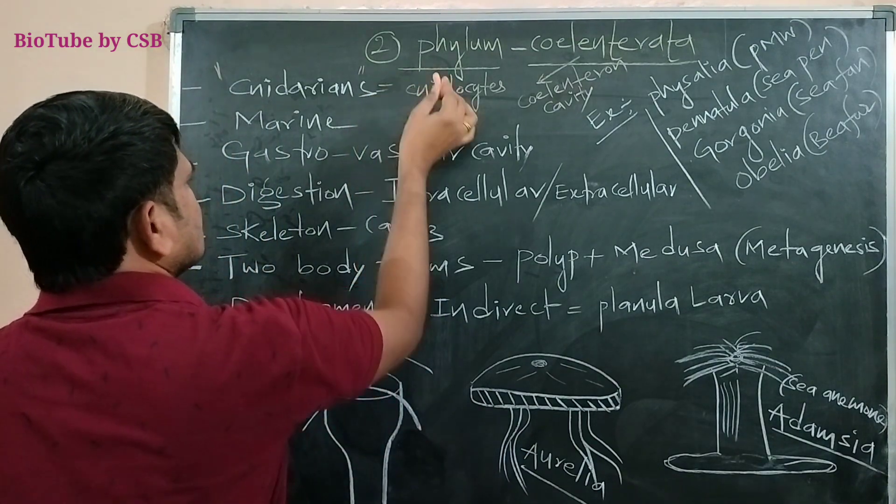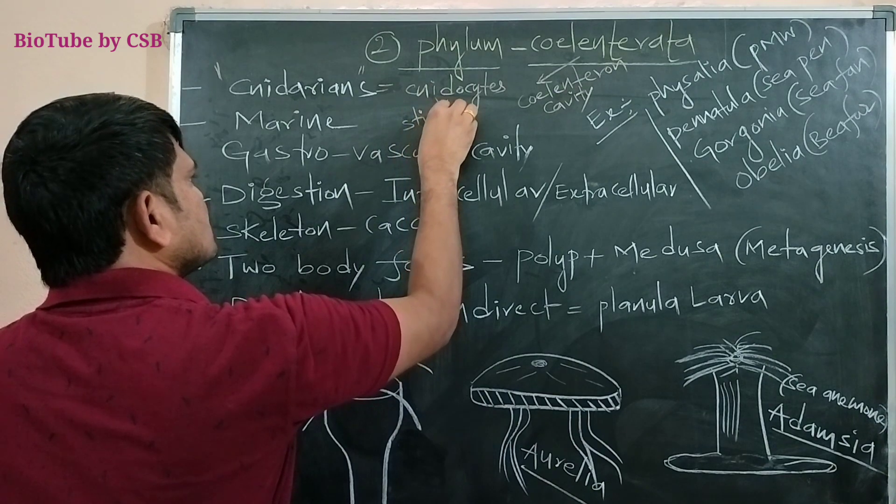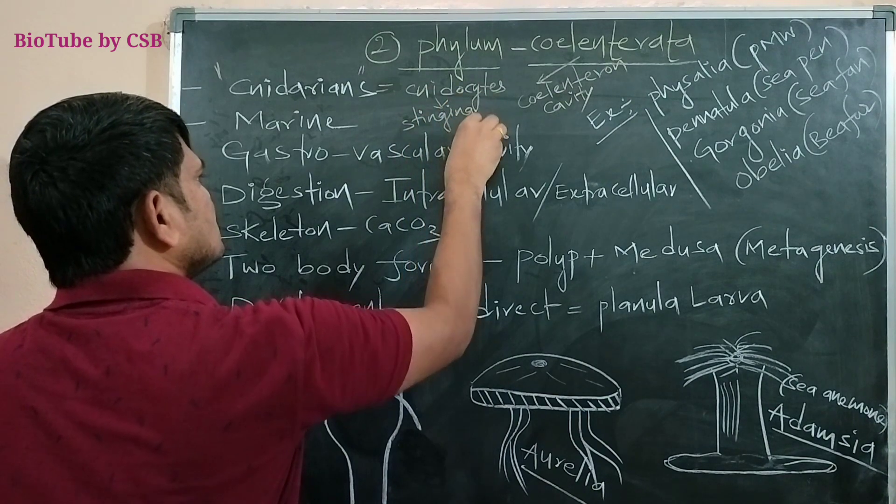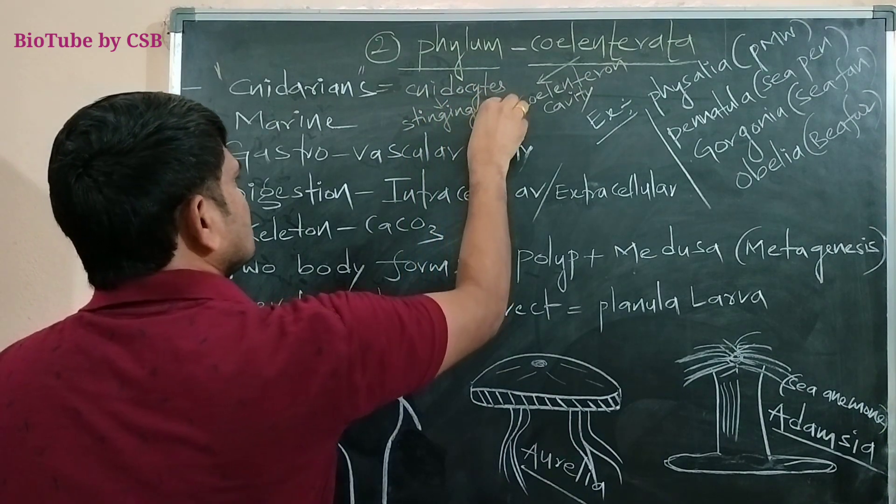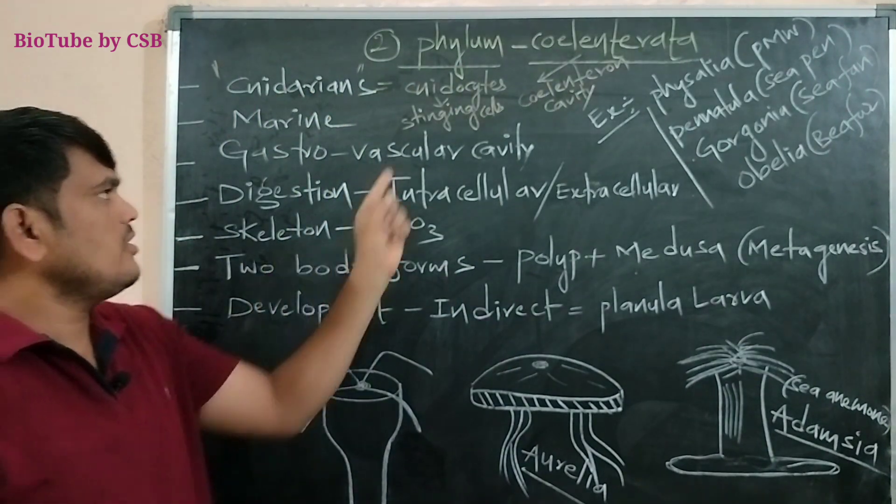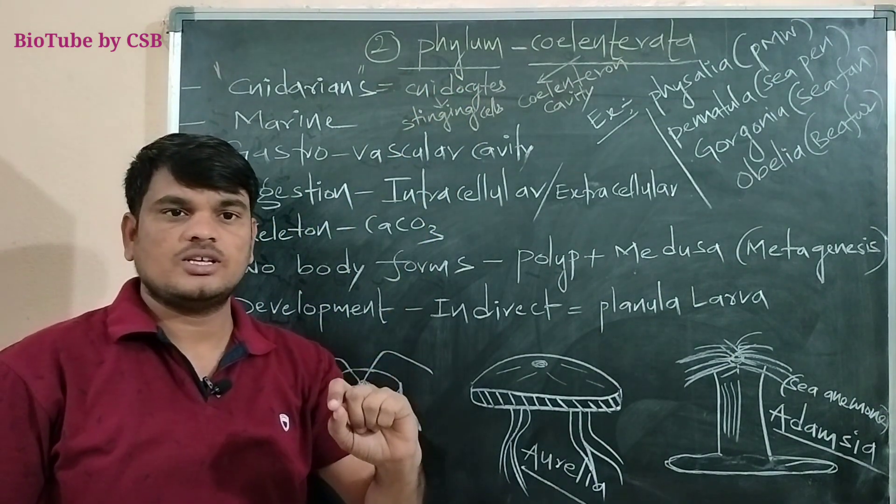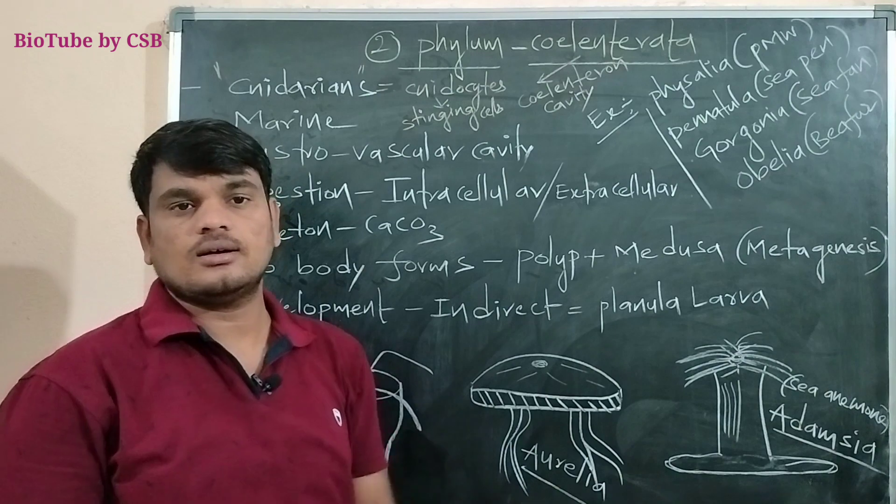These are stinging cells. Stinging cells means these are toxic cells. These are stinging cells. So, these are commonly called Cnidarians because they are having cnidocytes. Cnidocytes are stinging cells. These are poisonous, toxic cells for protection.